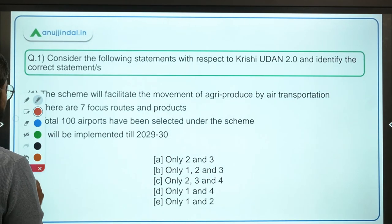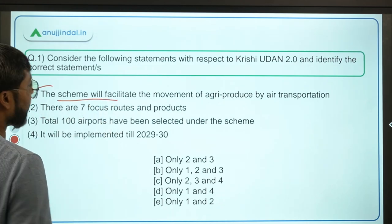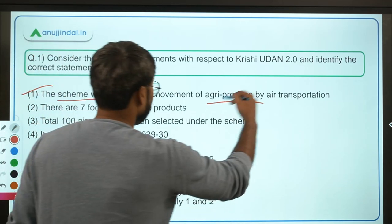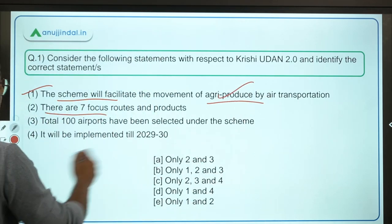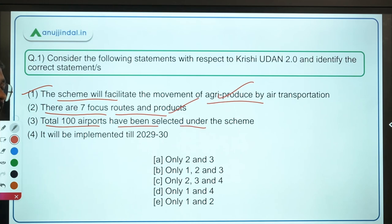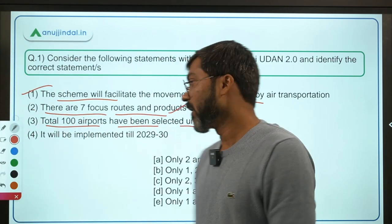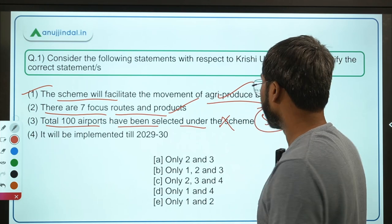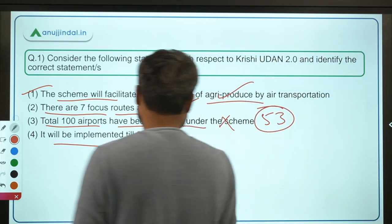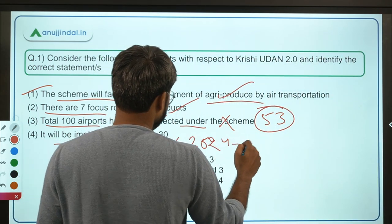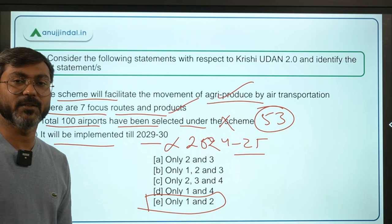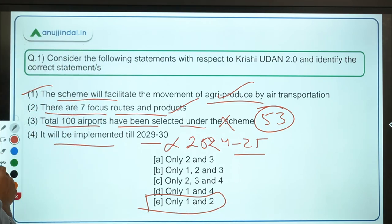Coming back to the question: Statement 1 — the scheme facilitates movement of agricultural produce by air transportation — is correct. Statement 2 — there are seven focus routes and products — is also correct. Statement 3 — 100 airports have been selected — is incorrect; it's 53 airports. Statement 4 — implemented till financial year 2030 — is incorrect; it's till 2025. Therefore, the correct answer is option E: only statements 1 and 2.